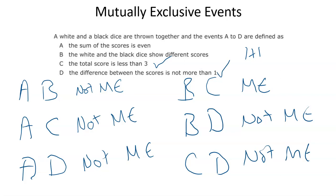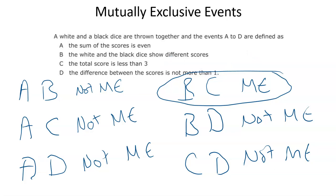So in these four examples, there was only one mutually exclusive pair: having the scores be different and the total less than three. In some examples you might find that lots of pairs are mutually exclusive and only a couple are not. The important thing is: if you can think of an example which satisfies both of the requirements, then they are not mutually exclusive. And if there is no situation where both can happen at once, then they are mutually exclusive. That's how you tell the difference. Any questions, you can pop them in the comments — but otherwise, ta-ra for now.